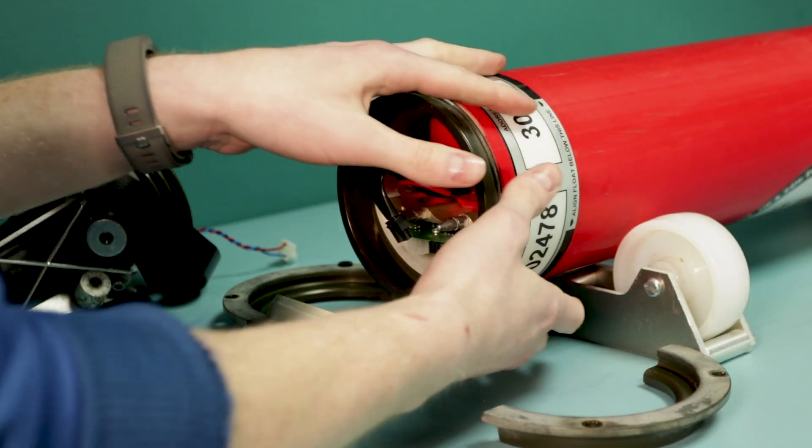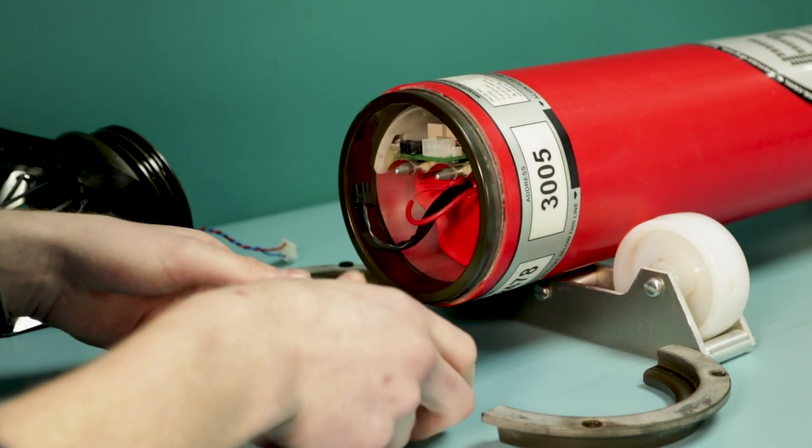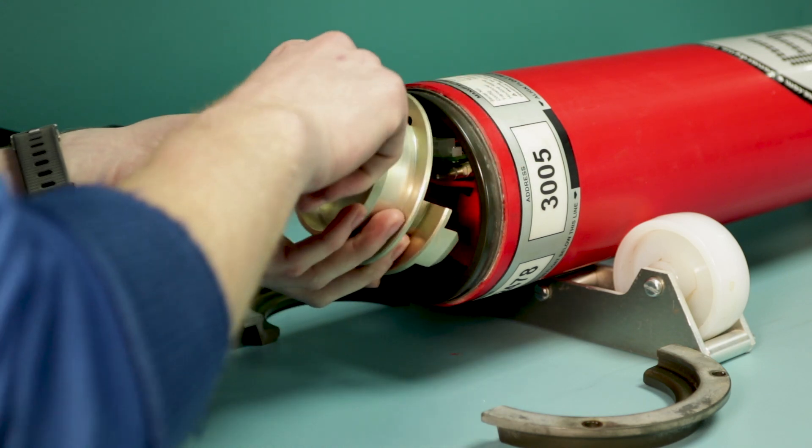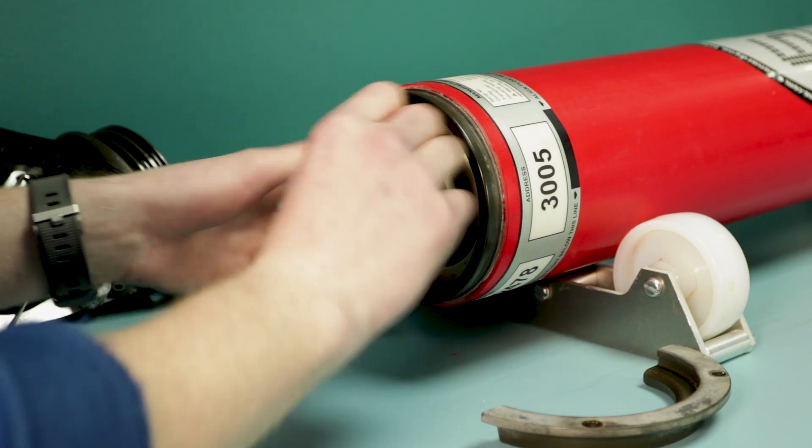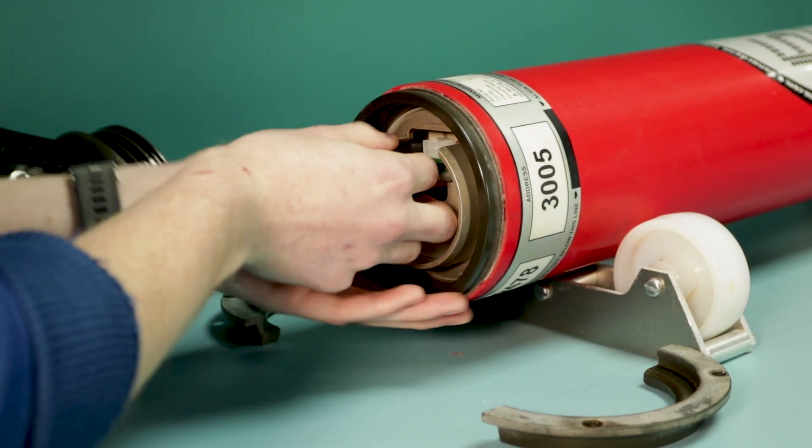Now spin your Compat back around so the battery is in the lower half of the transponder. Place the bulkhead back in the Compat, feeding the battery connectors through the center. Secure the battery connectors.